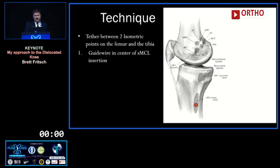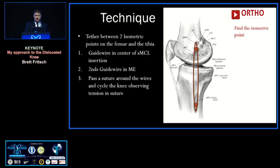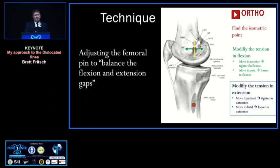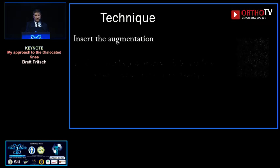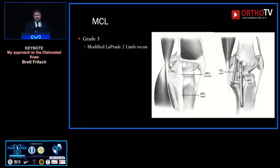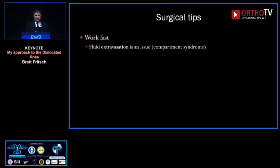I'm a minimal interventionist on the MCL side — I consider non-operative treatment or simple augmentation. I recreate isometry using a wire in the tibia and a wire in the femur, find the isometric point by passing a loop around it, cycle the knee, and adjust the femoral point as needed: move anteriorly for tighter in flexion, posteriorly to change tension in extension. Once I've balanced the flexion and extension gaps and found isometric points, I insert either an internal brace of FiberTape or a single graft — a kinematic reconstruction, not an anatomical one, so I can do aggressive rehab and let biology do the work. For severe grade 3s I do a modified LaPrade two-limb reconstruction.